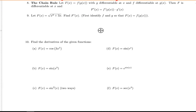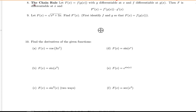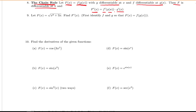Now that we've reviewed function composition, we're ready to talk about how to take derivatives of compositions of functions. There's not much to the statement of the chain rule. It says: suppose you have a function that is a composition of two differentiable functions. Then the composition is also differentiable, and its derivative is the derivative of the outside function evaluated at the inside function, multiplied by the derivative of that innermost function.